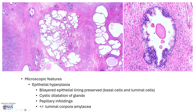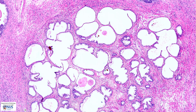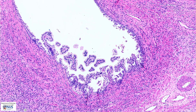Microscopically, we can see epithelial hyperplasia. The epithelial lining is still bilayered with the outer basal cells and the inner luminal cells. Sometimes the glands can be cystically dilated, and occasionally there may be papillary infoldings — for example, this gland is enlarged towards the lumen, and we can see luminal corpora amylasia. Here is a higher magnification view showing cystically dilated hyperplastic glands and an area showing papillary infoldings of the hyperplastic glandular epithelium. We can also see very nicely the fibromuscular stroma around the glands.